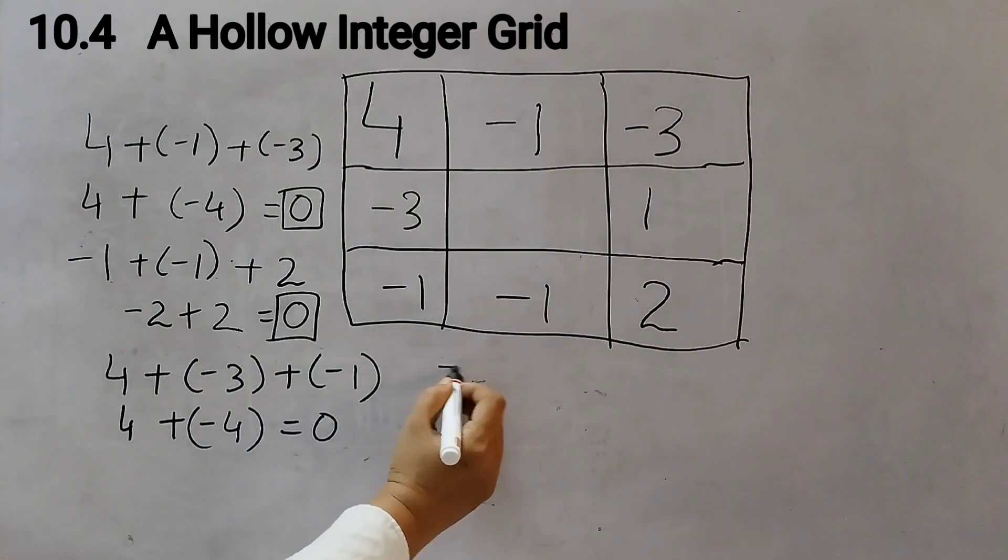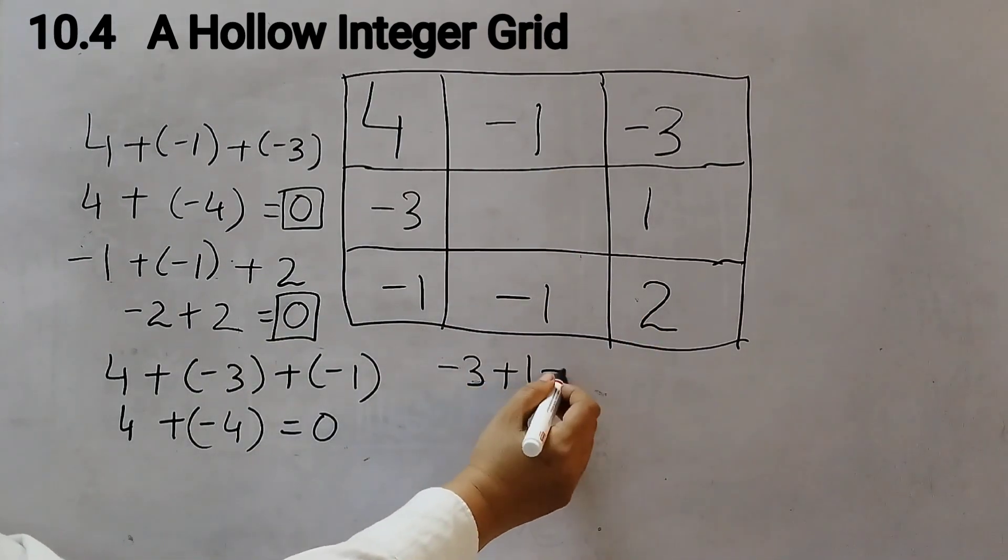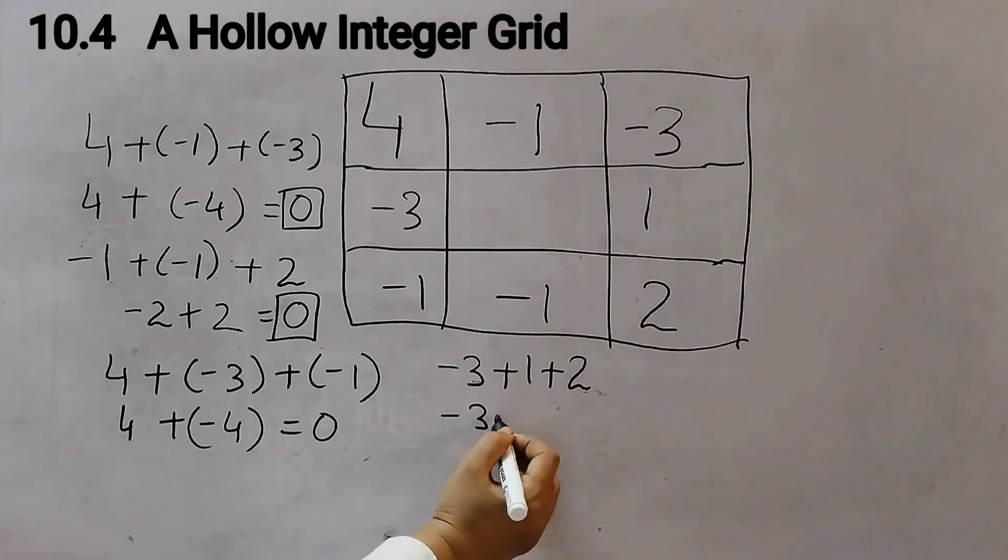Now the right column: (-3) plus 1 plus 2. Minus 3, 1 plus 2 is 3. Now see, same number, opposite signs, so it will cancel each other and we will get a 0 again.